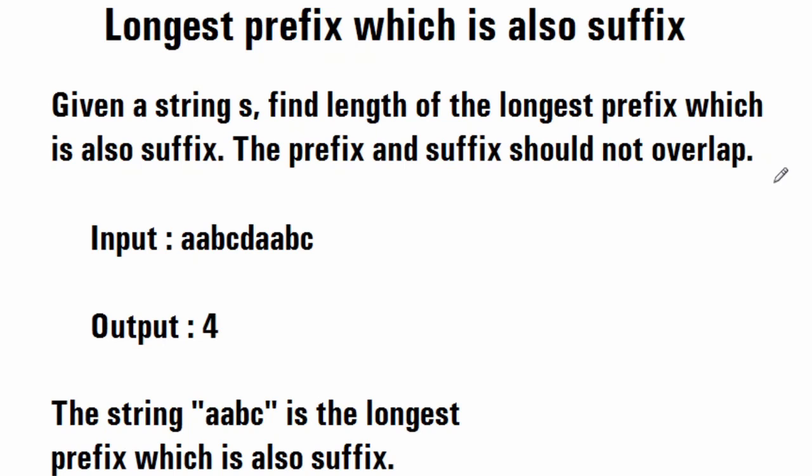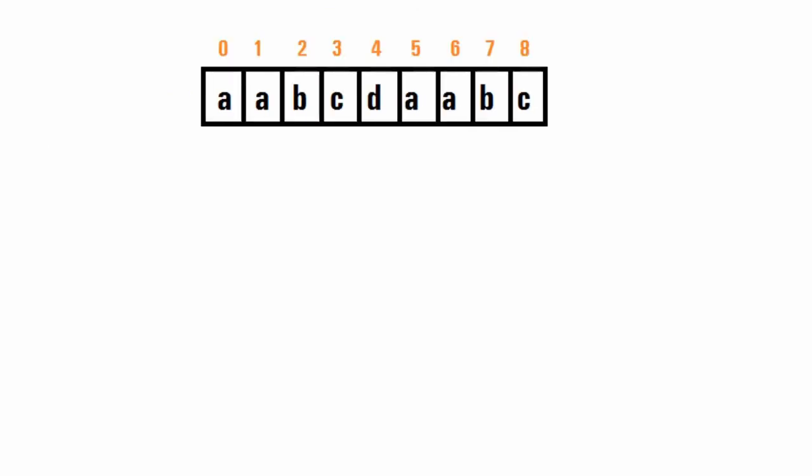You are given a string and you have to find the longest prefix which is also a suffix — a substring present on both the left and right side of the string, where these two substrings are the same. Once found, print the length of that prefix or suffix. For example, for a particular input, 'aabc' is the longest prefix which is also a suffix, and its length is four, so we print four.